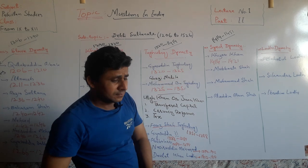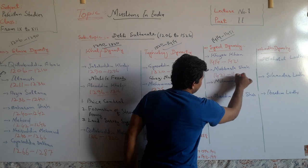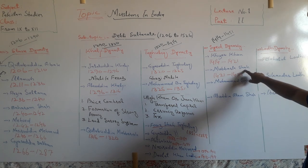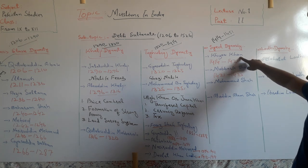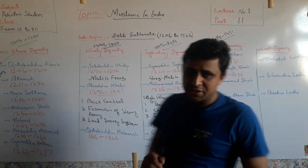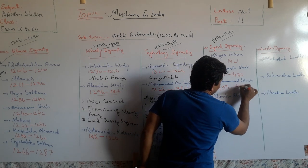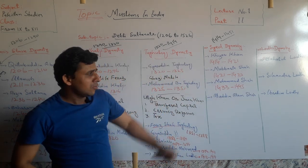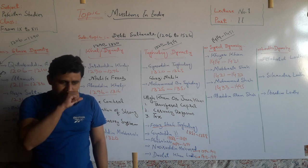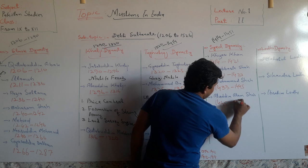After Khizar Khan, Mubarak Shah became the ruler of the Sayyad dynasty from 1421 to 1433. After Mubarak Shah, Muhammad Shah — the nephew of Mubarak Shah — became the ruler from 1433 to 1445. After Muhammad Shah, Alauddin Alam Shah became the ruler of the Sayyad dynasty. He was the last ruler, reigning from 1445 to 1451, when the Sayyad dynasty ended.